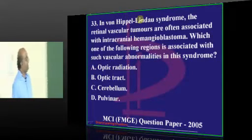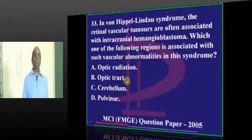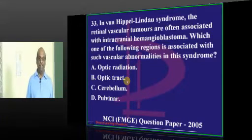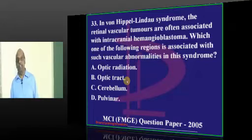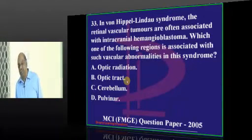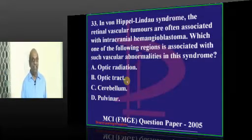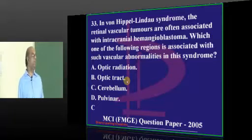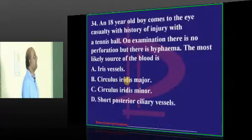In Von Hippel-Lindau syndrome, other than retinal angioma, where else do you find involvement? It leads to polycythemia due to erythropoietin secretion. Everyone correctly answers: cerebellar hemangioblastoma, along with retinal involvement, is the combination seen in Von Hippel-Lindau.